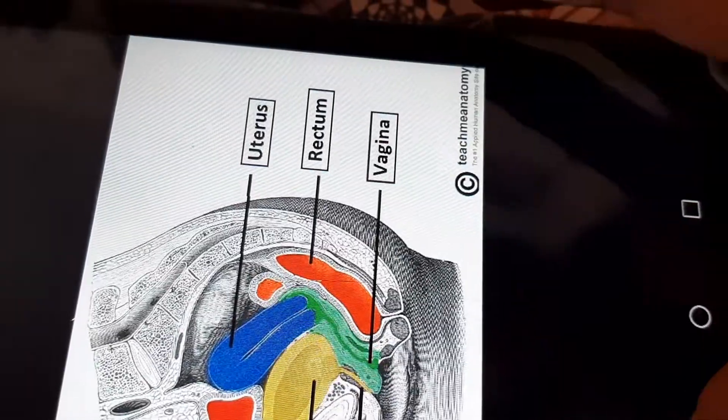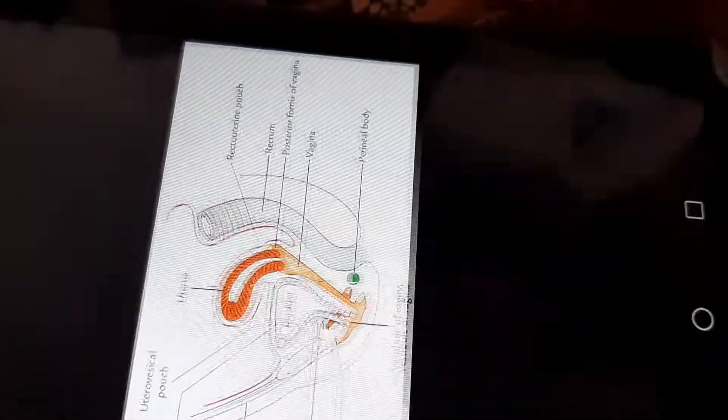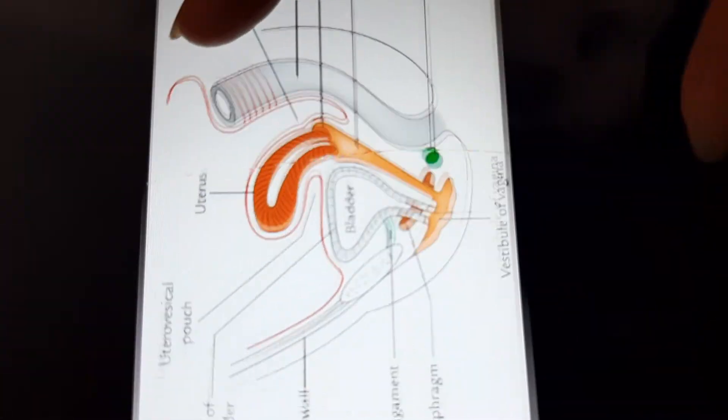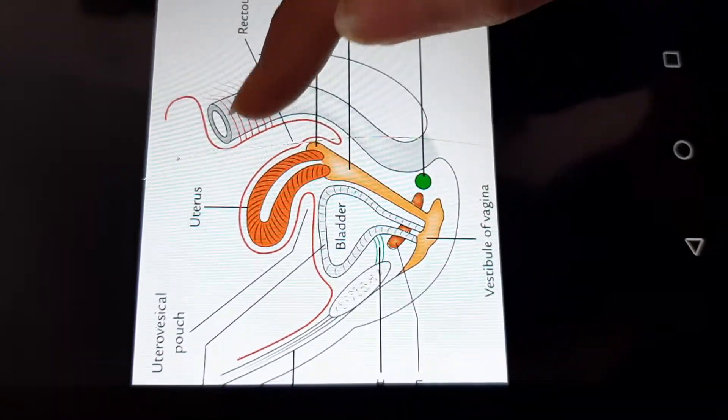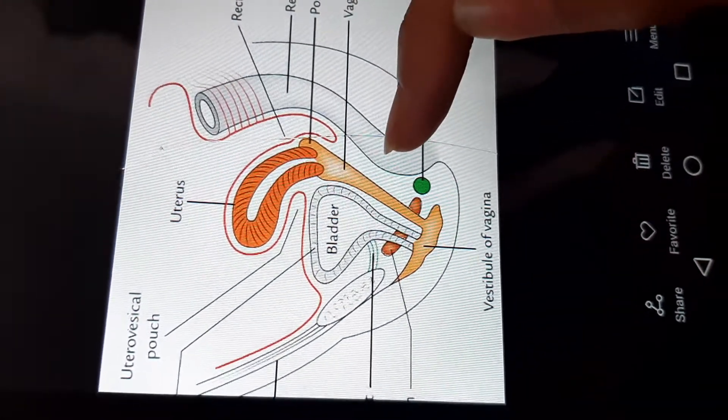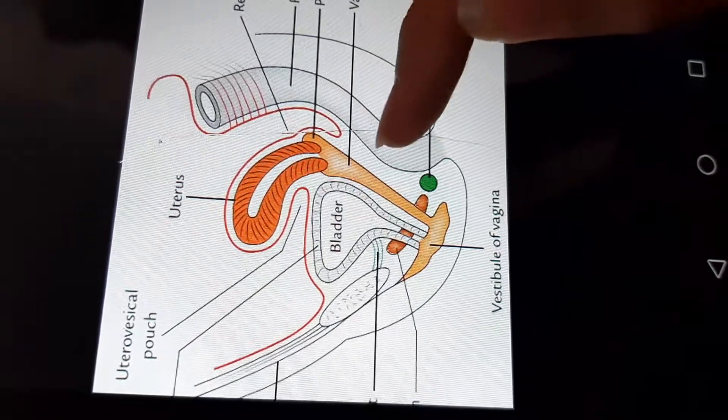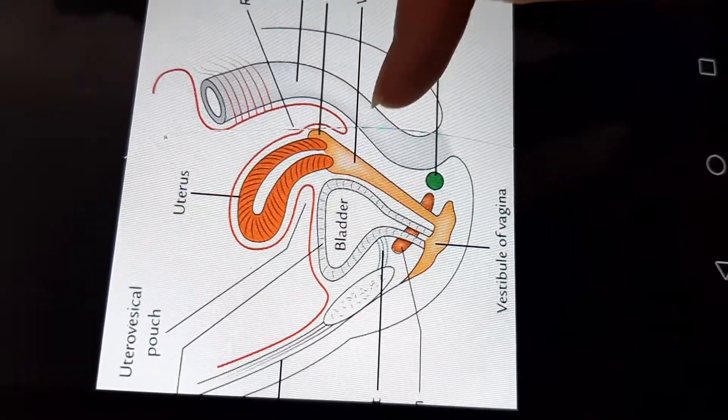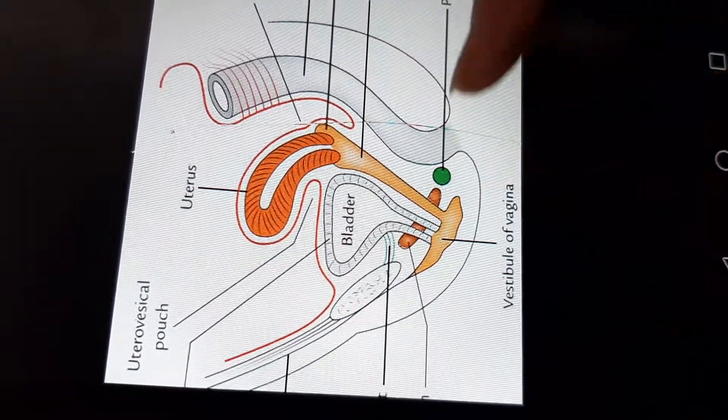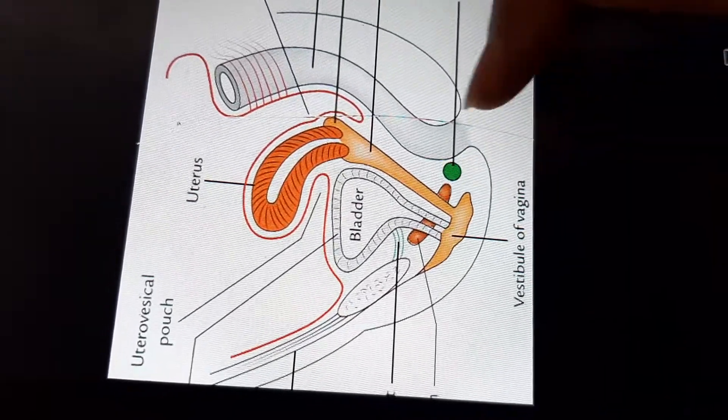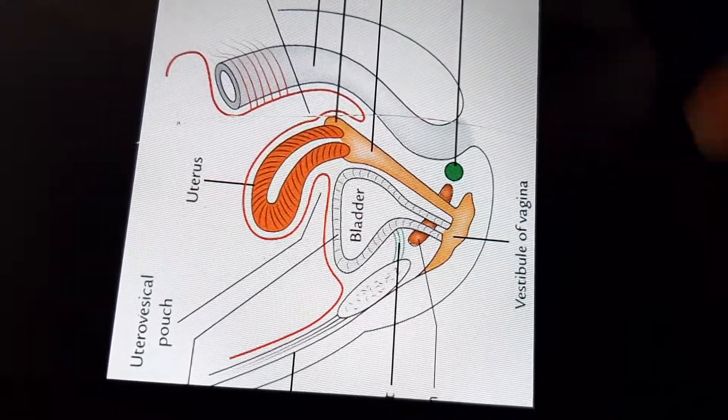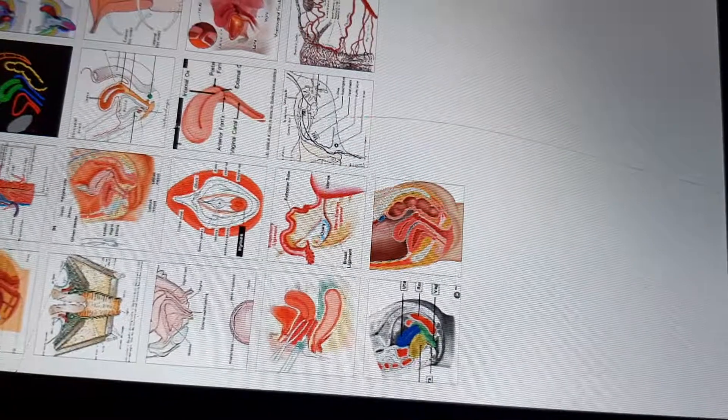Posterior relations: posteriorly upper one-third has recto-uterine pouch, middle one-third has rectal ampulla (rectum's expanded portion), and lower one-third has a fibromuscular structure which is known as perineal body. Next we will come to its lateral relations.